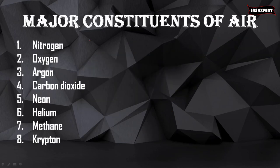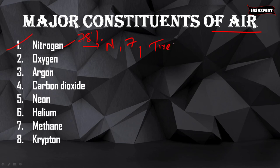The major constituents of air. The first major constituent is nitrogen, which occupies 78%. The symbol of nitrogen is N and atomic number is 7. It is used as a preservative in the food industry, used for fire suppression, and used in tire filling.